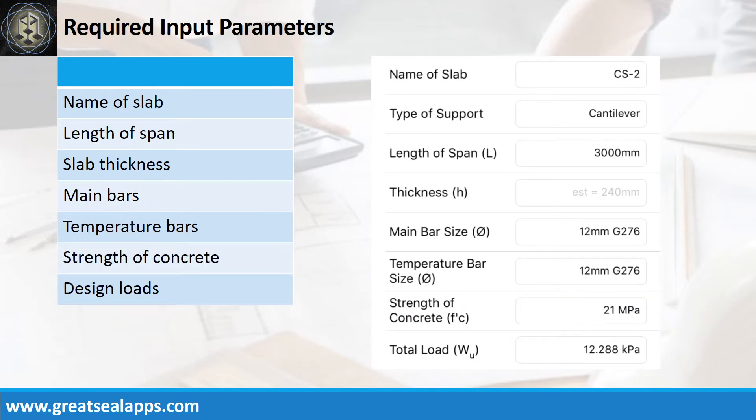Enumerate input parameters required: Name of slab: CS2. Type of support: cantilever. Length of span: 3000 mm. Slab thickness: 240 mm.